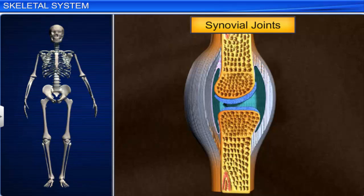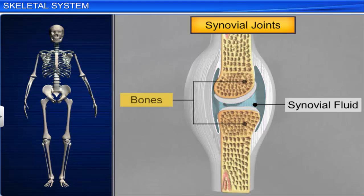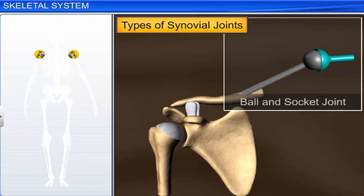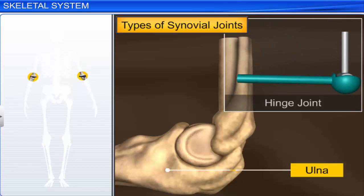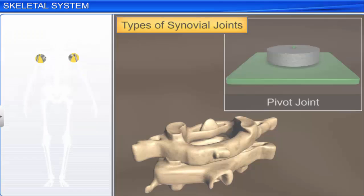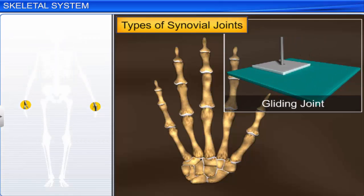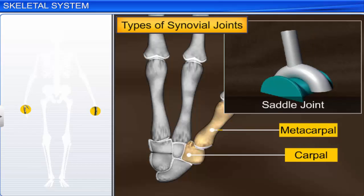The last type is the synovial joint, which is characterized by the presence of a lubricating fluid called synovial fluid, filled in a synovial cavity between the articulating surfaces of the two bones. These joints allow a considerable degree of movement. There are several types of synovial joints, such as the ball and socket joint between the humerus and scapula, hinge joint between the ulna and humerus, pivot joint between the atlas and axis vertebrae, gliding joint between the carpals, and the saddle joint between the carpal and metacarpal of the thumb.